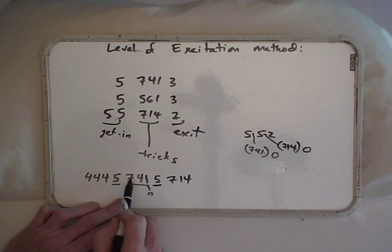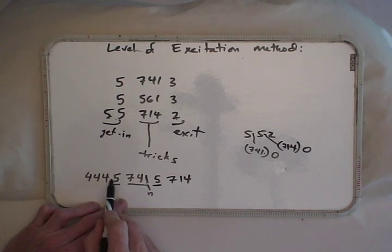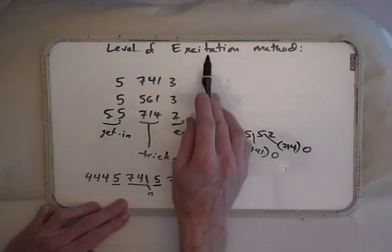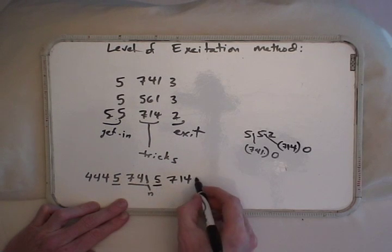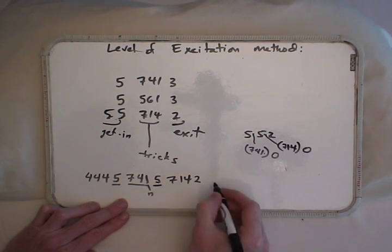In any case, if you're doing 741, you're already at a 5 level of excitation. Another 5 gets you into a higher level of excitation of this trick, and then you can either leave and go back into 4s.